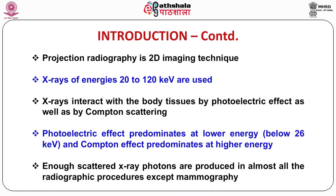Projection radiography is one of the medical imaging techniques in which an image of a three-dimensional object — the patient — is recorded in two dimensions, resulting from superposition of the anatomy along each radiation ray. In this technique, X-rays of energy 20 to 120 keV are used. These X-rays interact with body tissues by photoelectric effect as well as by Compton scattering. The probability of Compton scattering in body tissue is about the same as for the photoelectric effect at 26 keV, and above 26 keV Compton scattering is dominant.